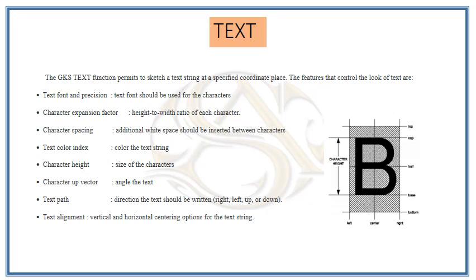Text is represented in GKS format using several parameters. For example, the character B has a character height, center point, and color. Additional parameters include text path — which can be changed from horizontal to vertical — and text alignment.